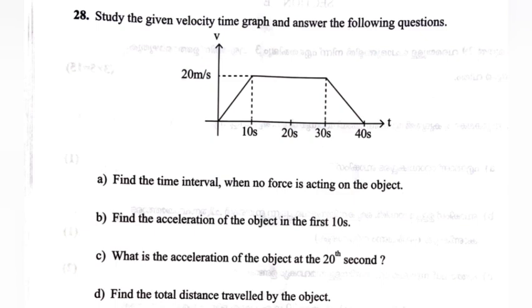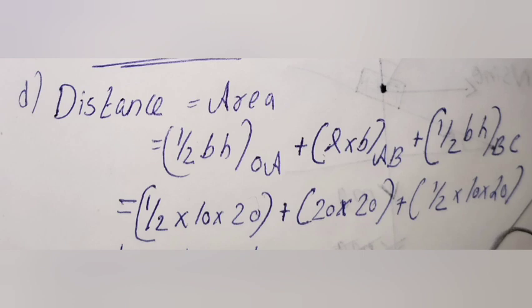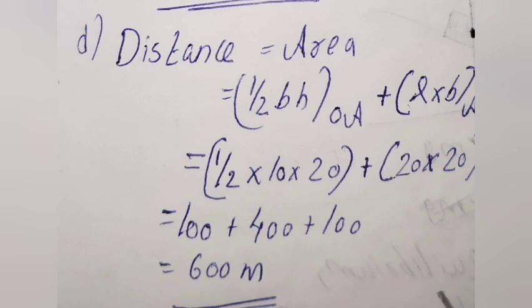Part d: Find the total distance traveled by the object. Distance = area = ½×b×h of OA + l×b of AB + ½×b×h of BC = ½×10×20 + 20×20 + ½×10×20 = 100 + 400 + 100 = 600 meters.